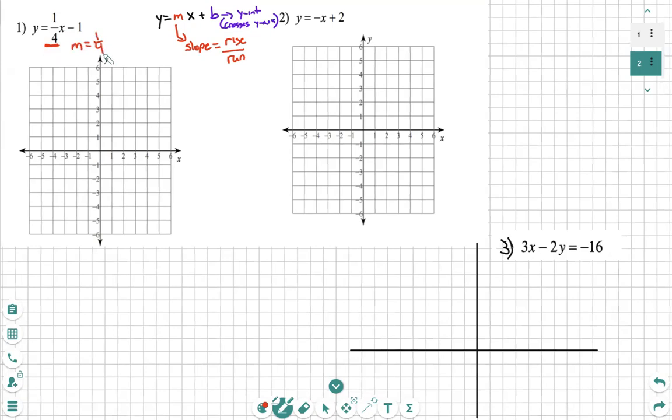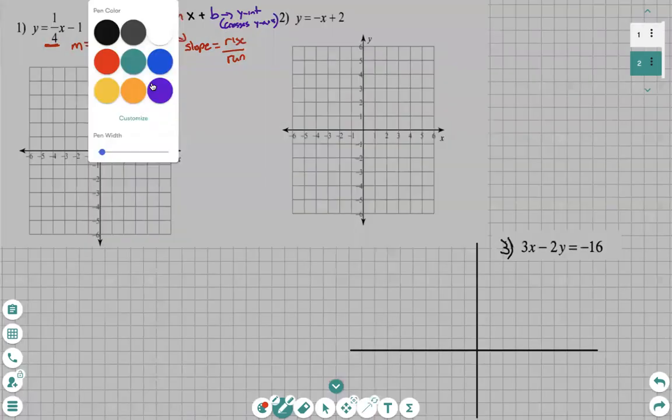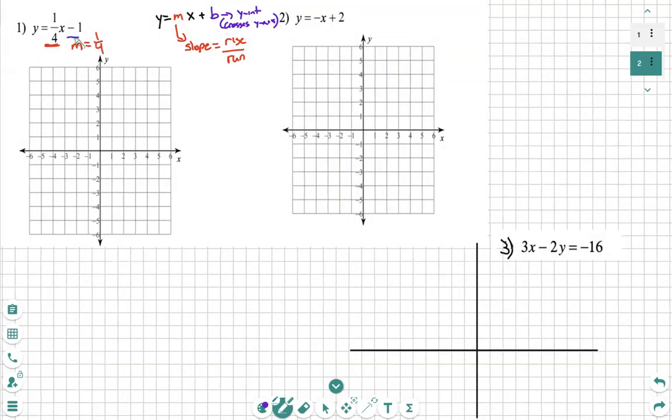And we see right there, my coefficient in front of x is 1 fourth. m equals 1 over 4. We also see that b is here. And we have to make sure we keep the sign of b, whether it's positive or negative. So my b in this situation is negative 1.